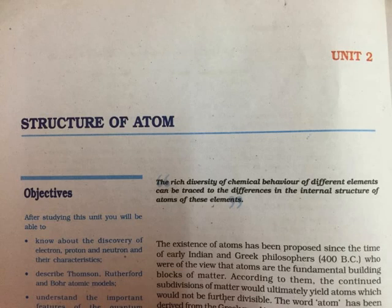Section 2.3.2: Particle Nature of Electromagnetic Radiation — Planck's Quantum Theory. Some experimental phenomena such as diffraction and interference can be explained by the wave nature of electromagnetic radiation. However, the following observations could not be explained with the help of even the electromagnetic theory of 19th century physics: first, the nature of emission of radiation from hot bodies; second, ejection of electrons from metal surface when radiation strikes it; third, variation of heat capacity of solids as a function of temperature; fourth, line spectra of atoms with special reference to hydrogen.